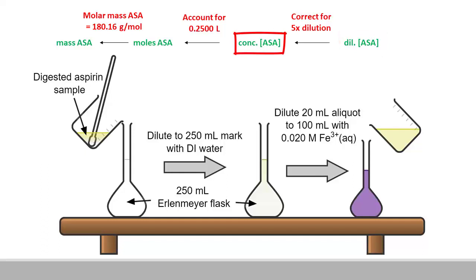we can correct for the 5-fold dilution to obtain the concentration of the acetylsalicylic acid in the concentrated aspirin solution. With this concentration and the volume of 0.2500 liters, the amount of acetylsalicylic acid in moles can be calculated. Finally, this can be converted to the mass in milligrams using the molar mass and a gram to milligram conversion.